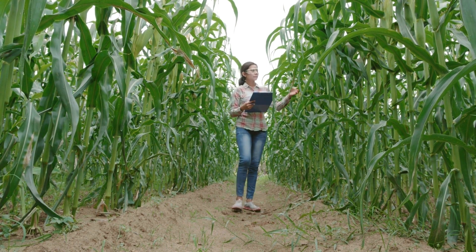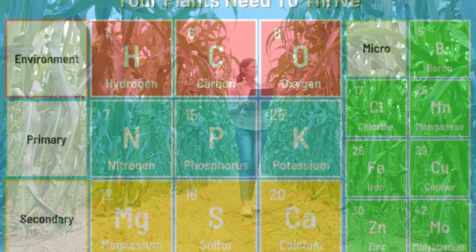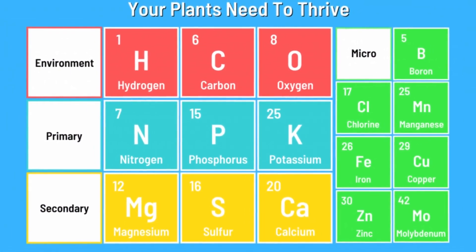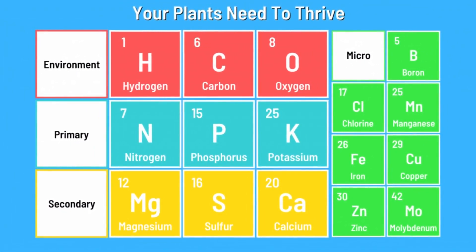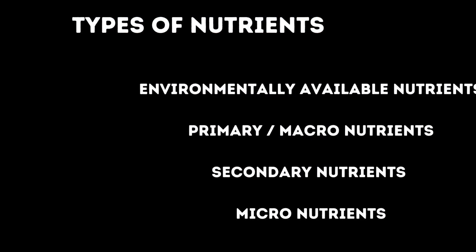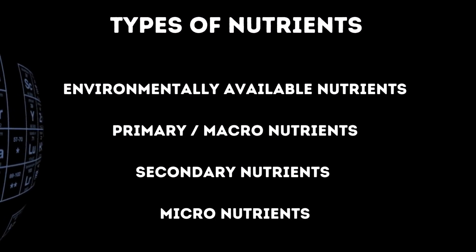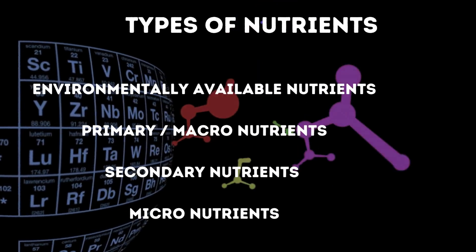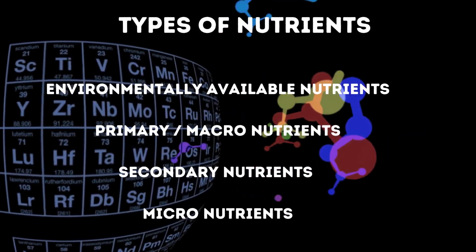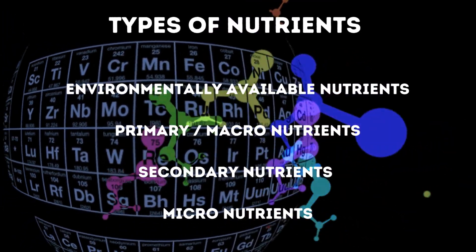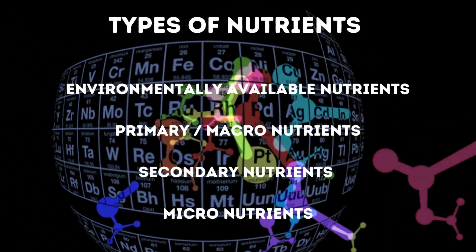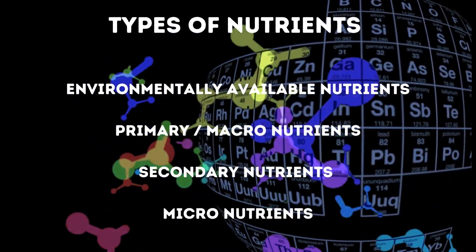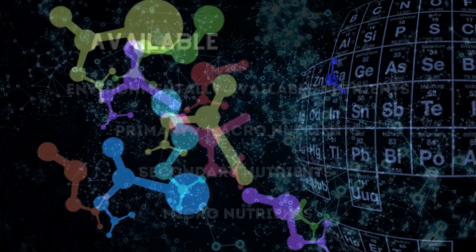Plants most commonly require 16 nutrients throughout all stages of their life cycle. These nutrients can be majorly classified into four categories: environmentally available nutrients, primary nutrients, secondary nutrients, and micronutrients.